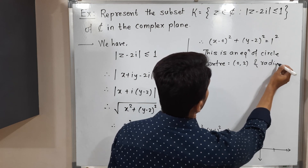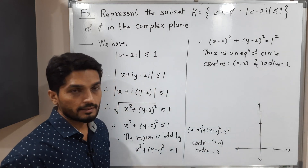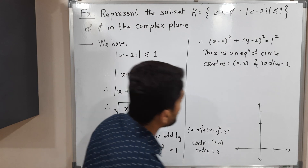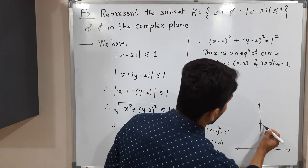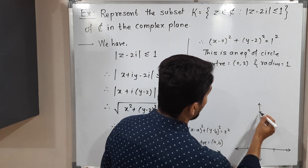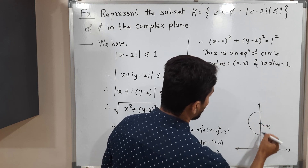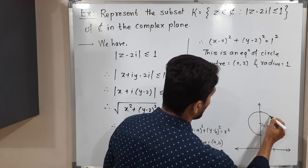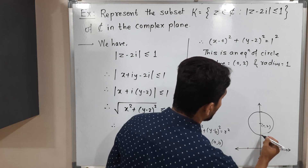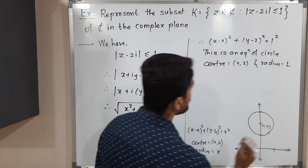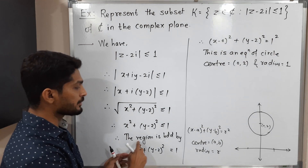Let me draw this circle here whose center is (0, 2) — which is here on the imaginary axis — and radius is 1. So we will have a circle like this. This is the equation of circle bounding our region.